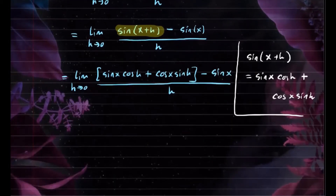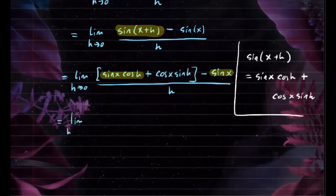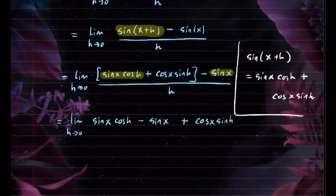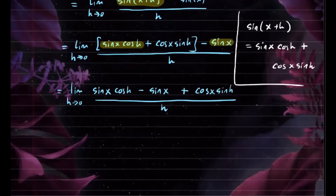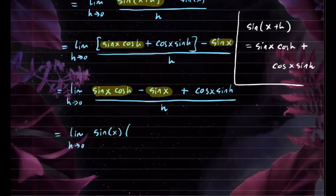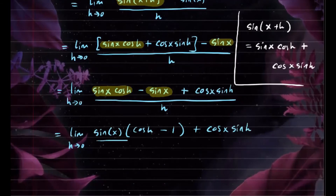Now we want to group these terms. Notice that the first and third terms both have sine x, so we group them together. We have the limit as h approaches 0 of sine x cosine h minus sine x, plus cosine x sine h, all over h. Factoring out sine x from the first group gives us sine x times cosine h minus 1, plus cosine x sine h, all over h.